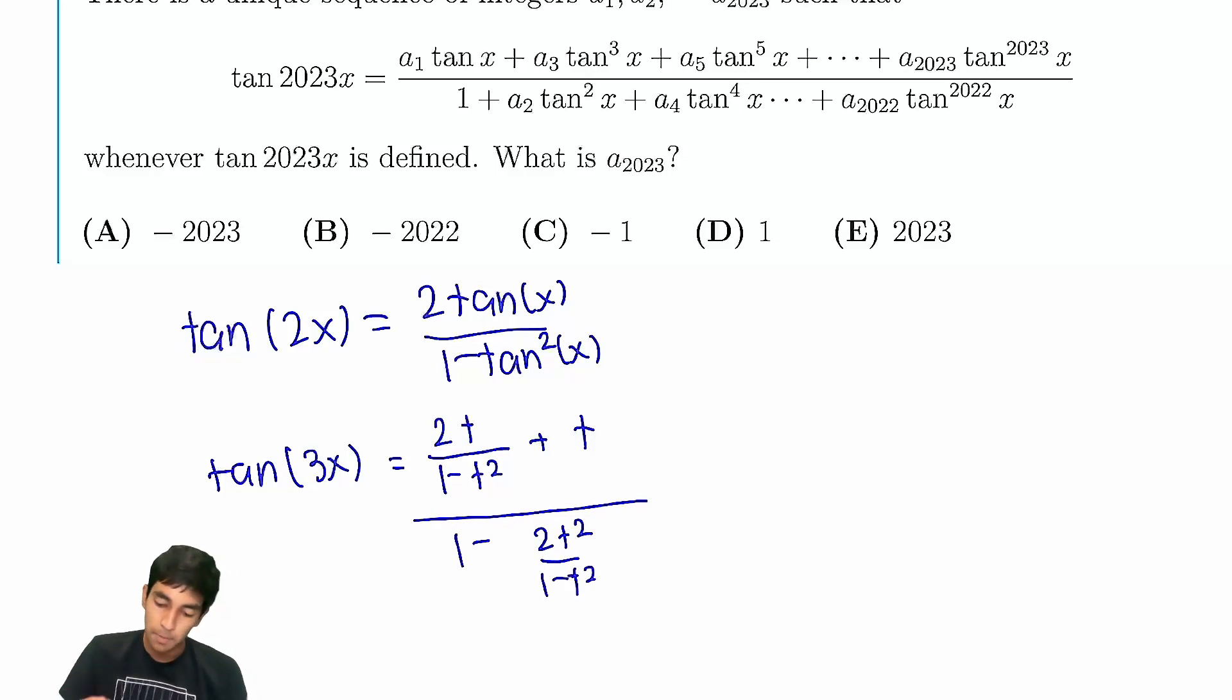The trick is we just multiply by 1 minus t squared everywhere, and then we end up with minus t cubed in the numerator. It's something like 2t plus t minus t cubed, and then here we end up 1 minus t squared, and then minus 2t squared. Clearly, for t cubed, the coefficient is negative 1.